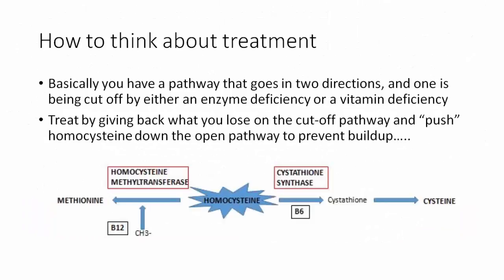A lot of the questions on this pathway are going to ask you for a treatment strategy. The general rule is that you have a pathway that can go in one of two directions, and one is going to be cut off either by an enzyme deficiency or a vitamin deficiency. The way to think about treatment is by giving back what you're losing on the cutoff pathway and trying to push homocysteine down the open pathway to prevent accumulation.